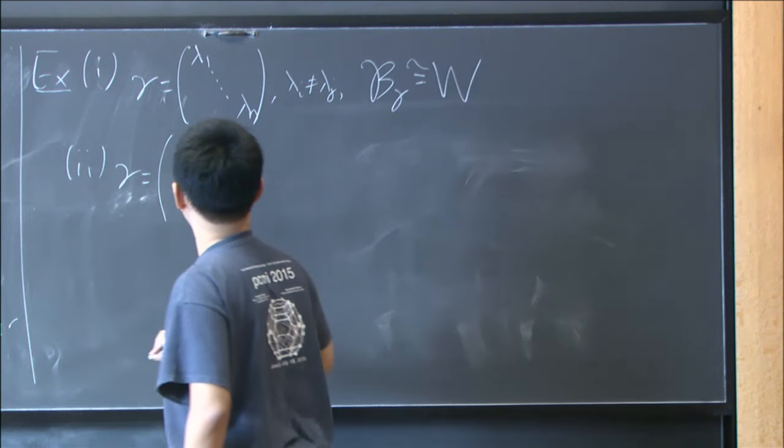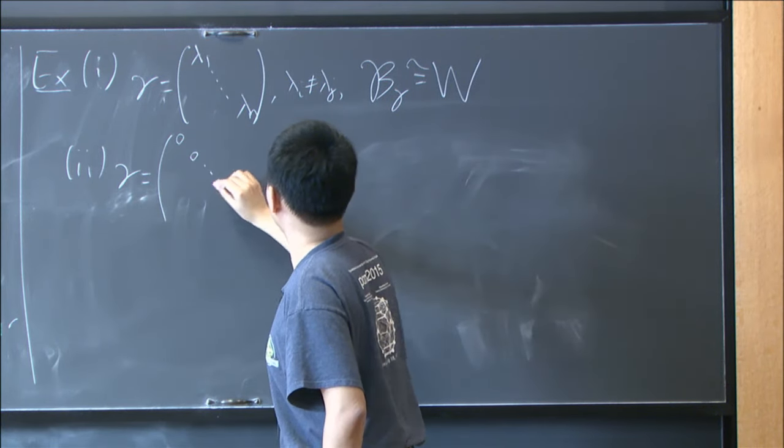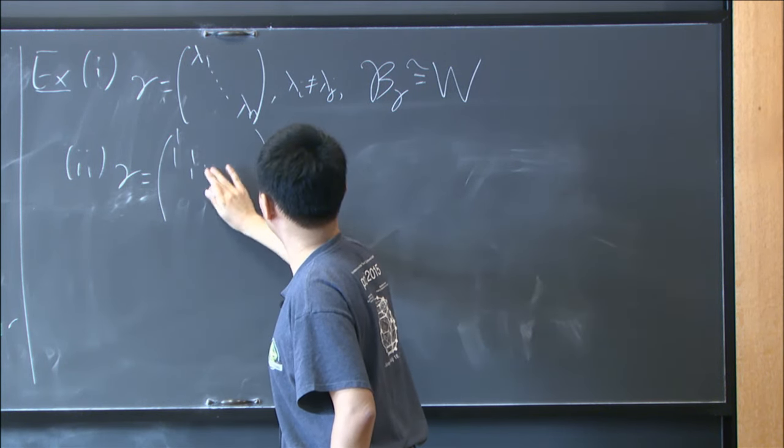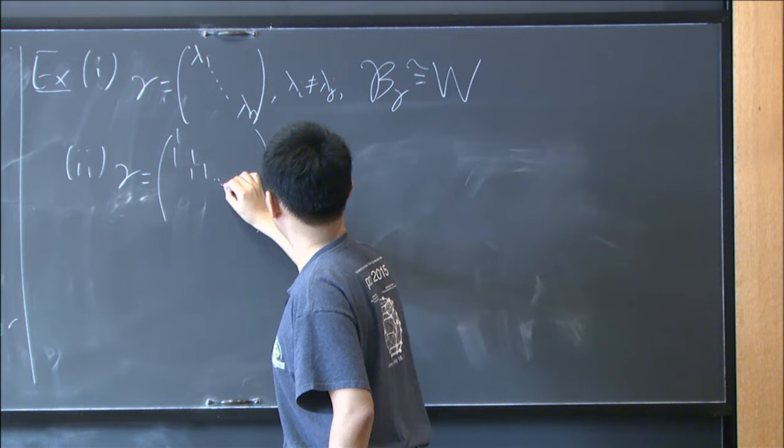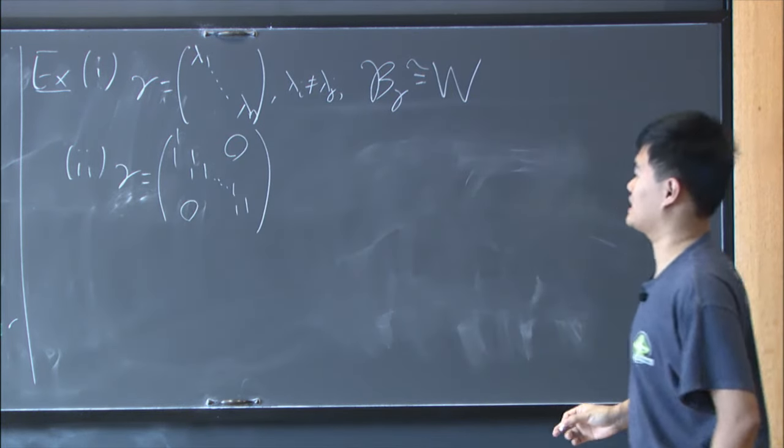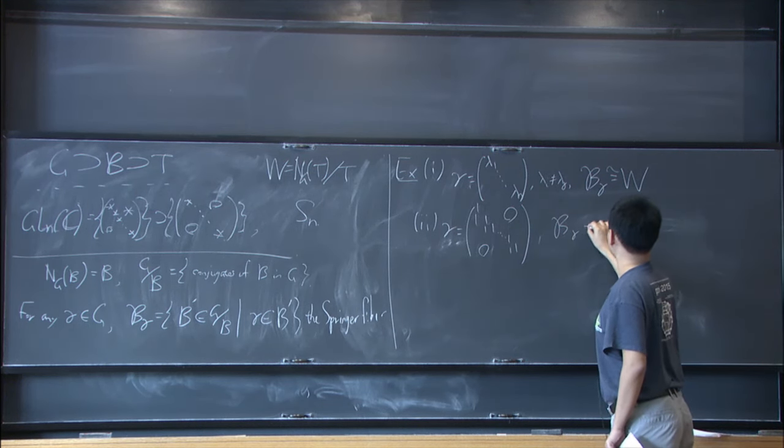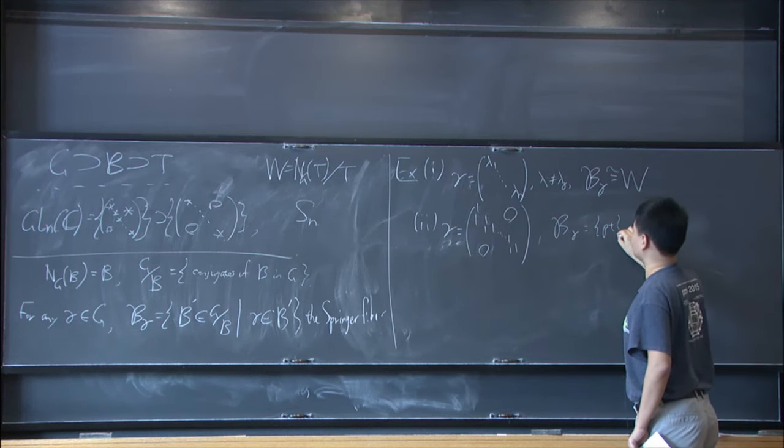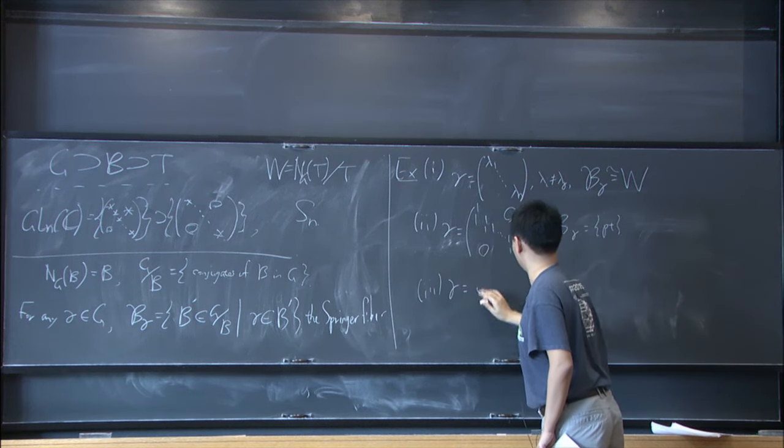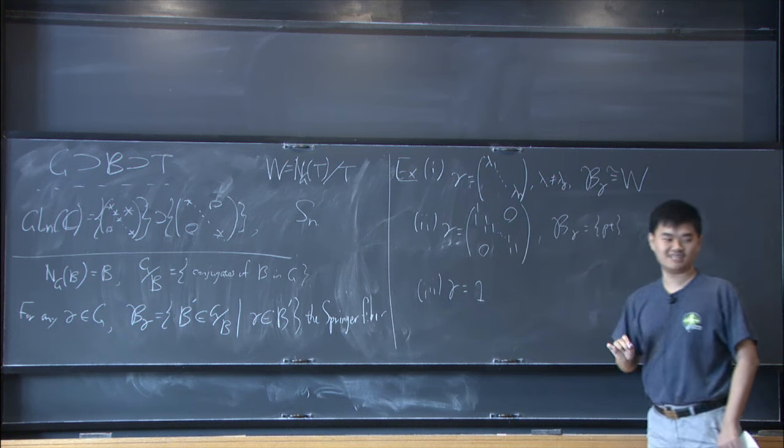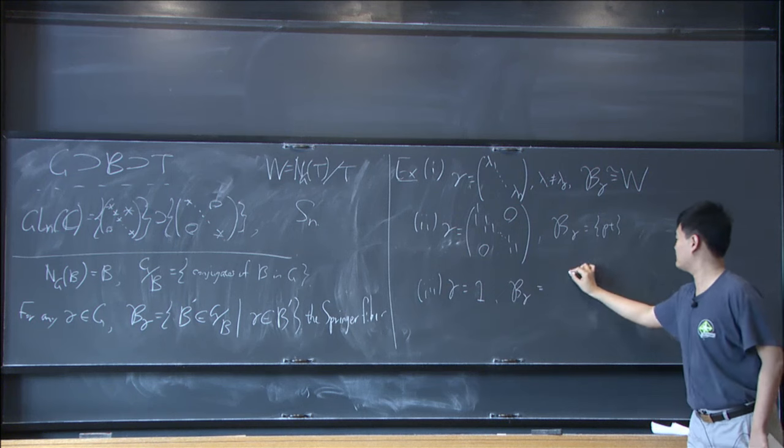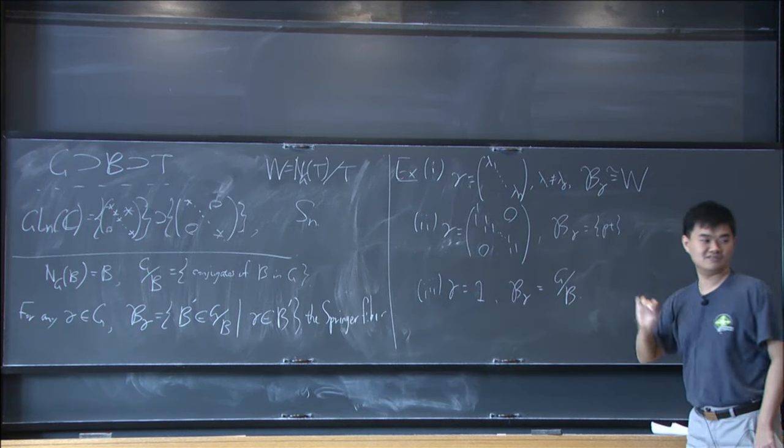If gamma is regular unipotent, in the case of GL_N, this is a point. If gamma is zero, sorry, one, the identity, then by definition, this is the whole variety of all conjugates of B.